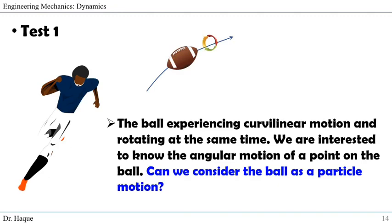Now let's take a quick test of our understanding. Think of a problem where a player hits a ball which is traveling in curvilinear motion and at the same time it is rotating. Our interest is to know the angular motion of a point on the ball. Can we consider the ball as a particle motion? The answer is no — we cannot assume this problem as a particle because the ball has rotation. Since we are considering rotation, we cannot assume the size of the body as negligible, so we have to take it as a rigid body.